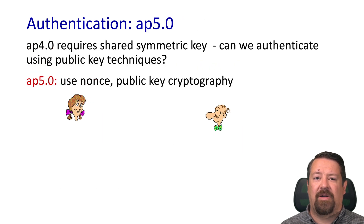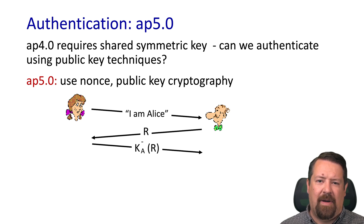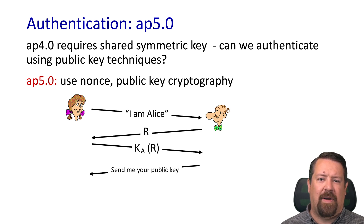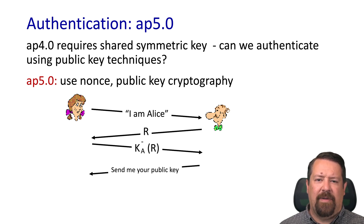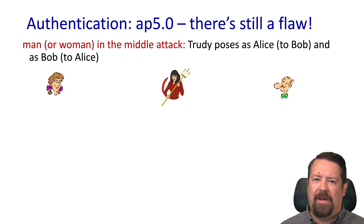Authentication protocol version 5 uses public key cryptography instead of a shared secret key. Alice says 'I am Alice,' Bob replies with a nonce and 'prove it,' and Alice sends back K-minus-A of R — encrypting R with her private key. Bob needs Alice's public key to decrypt that, which Alice can provide, or Bob can get it from Alice's website or a third party that certifies public keys. But wait — there's still a problem with this exchange.